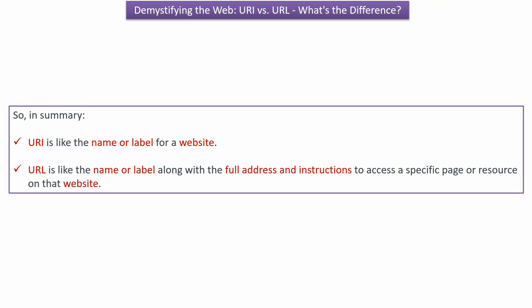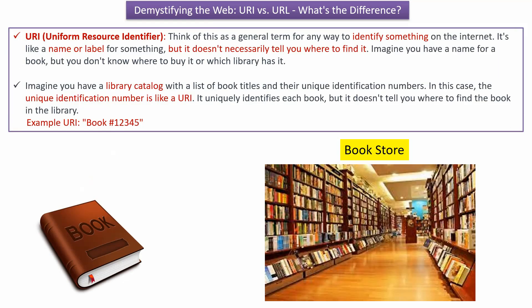So in summary, URI is like the name or label for a website, and URL is like the name or label along with the full address and instructions to access a specific page or resource on that website.